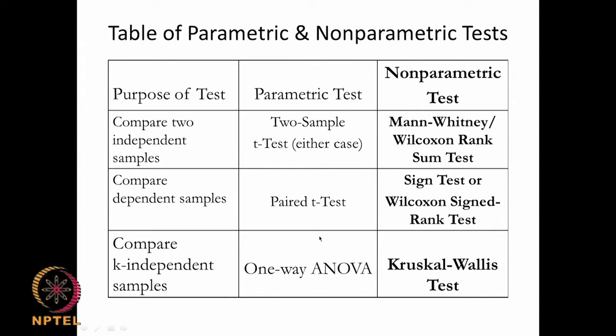If you are doing a one-way ANOVA equivalent, that is comparing independent samples, there is something called the Kruskal-Wallis test. In one-way ANOVA we have several sets of samples and we are trying to compare them. If you have homogeneity of variance we can use ANOVA, but otherwise we need to resort to the Kruskal-Wallis test.